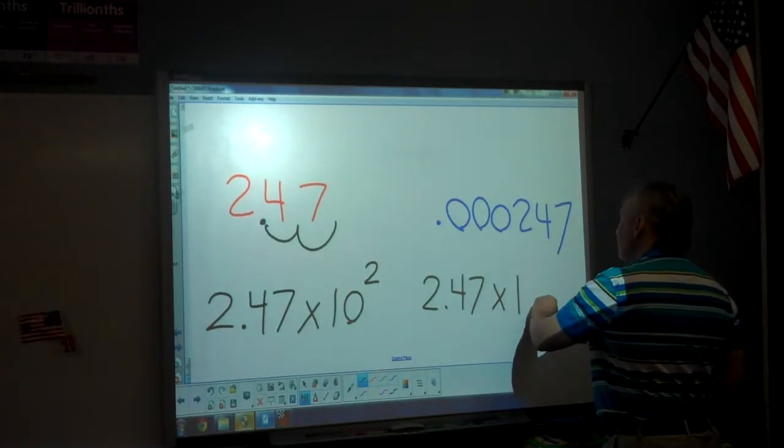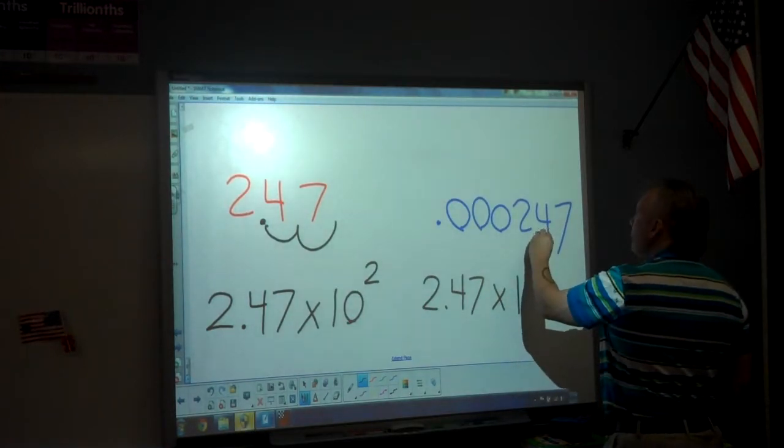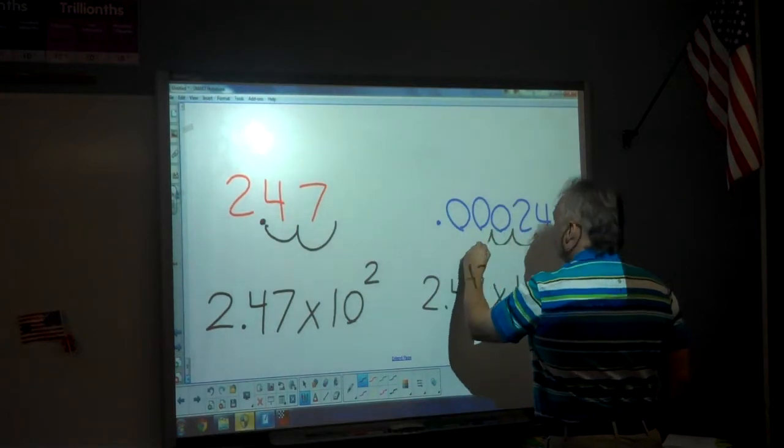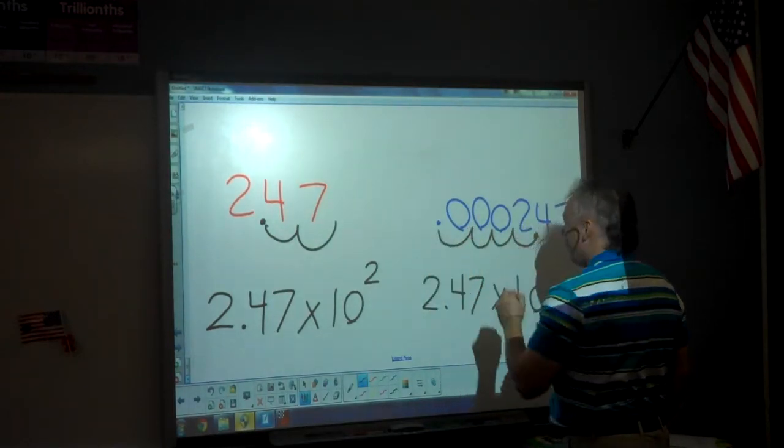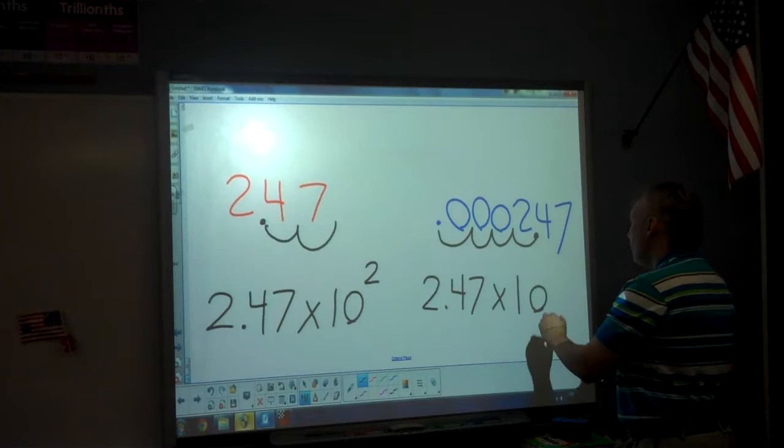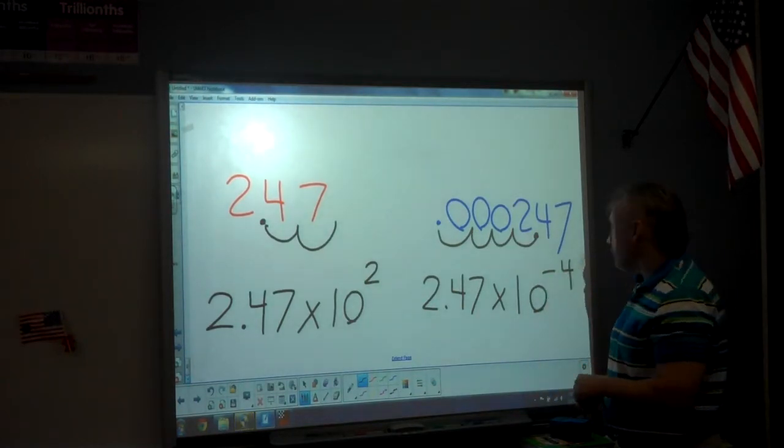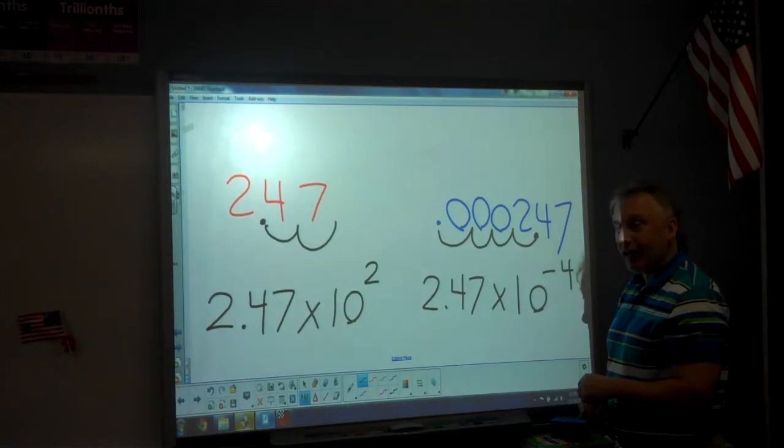and it's always 10. Here you can see that the point has moved 1, 2, 3, 4 places in the other direction, so that's to the negative 4. 2.47 times 10 to the negative 4.